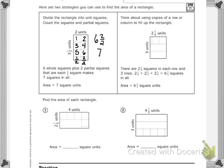So then it says think about using copies of a row or column to fill up the rectangle. We know this as repeated addition. There are two and one fourth squares in each row and three rows.